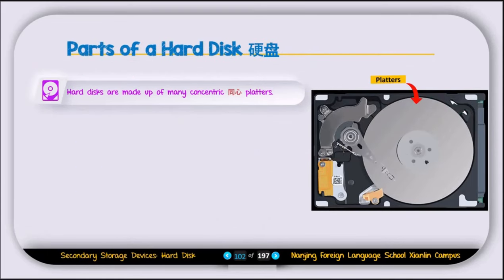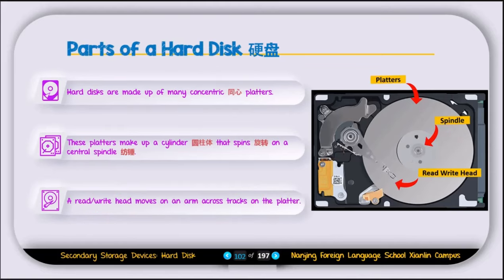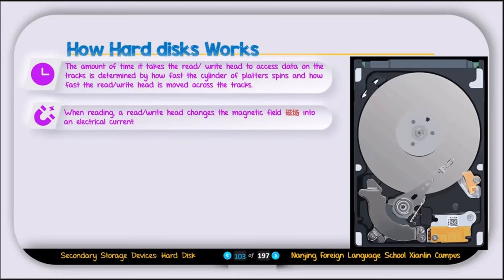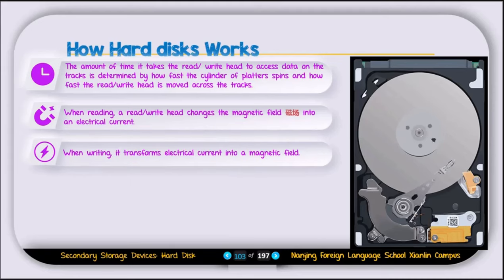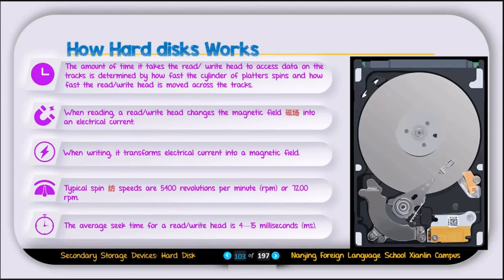Hard disks are made up of many concentric platters that form a cylinder spinning on a central spindle. A read-write head moves on an arm across the tracks of the platters. Access time is determined by how fast the platters spin and how fast the read-write head moves. When reading, the head converts a magnetic field into electrical current; when writing, it converts electrical current into a magnetic field. Typical spin speeds are 5,400 or 7,200 RPM, and the average seek time is 4 to 15 milliseconds.